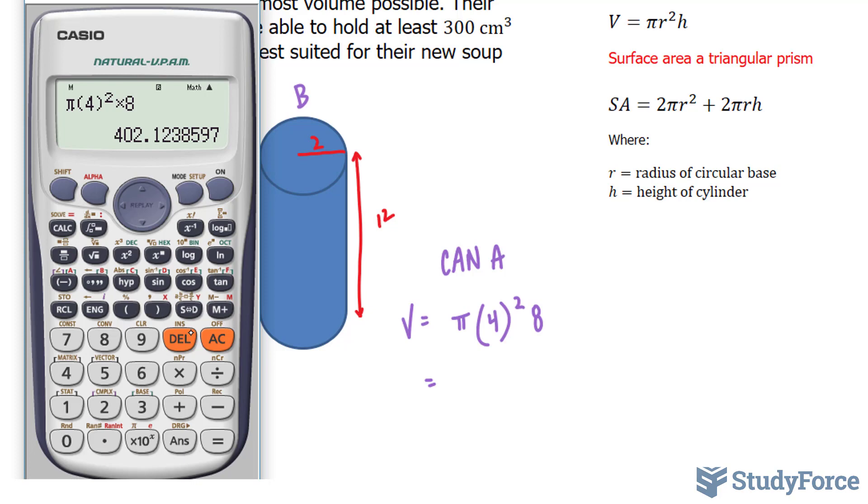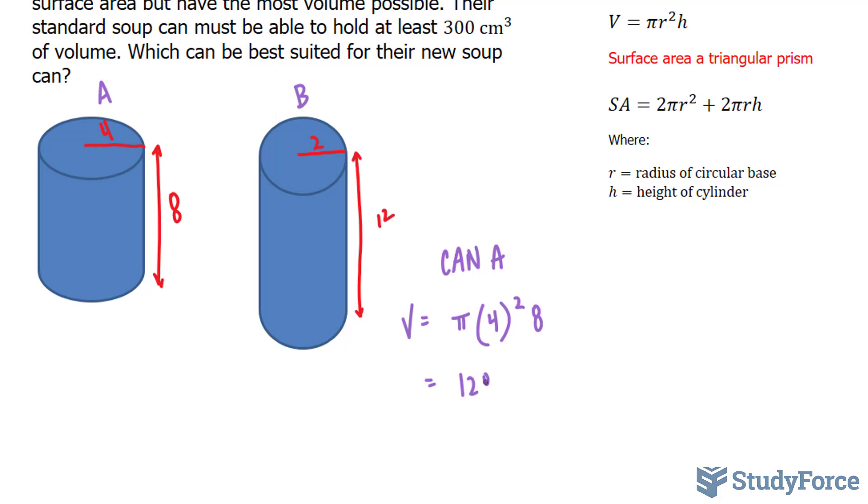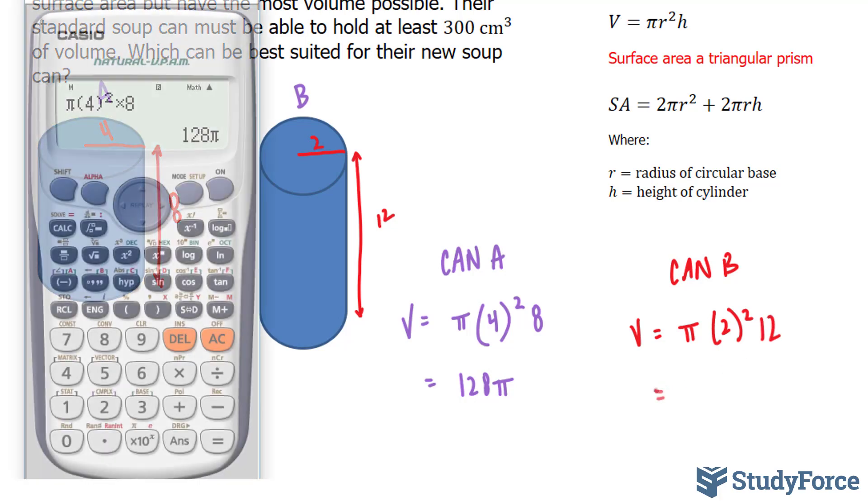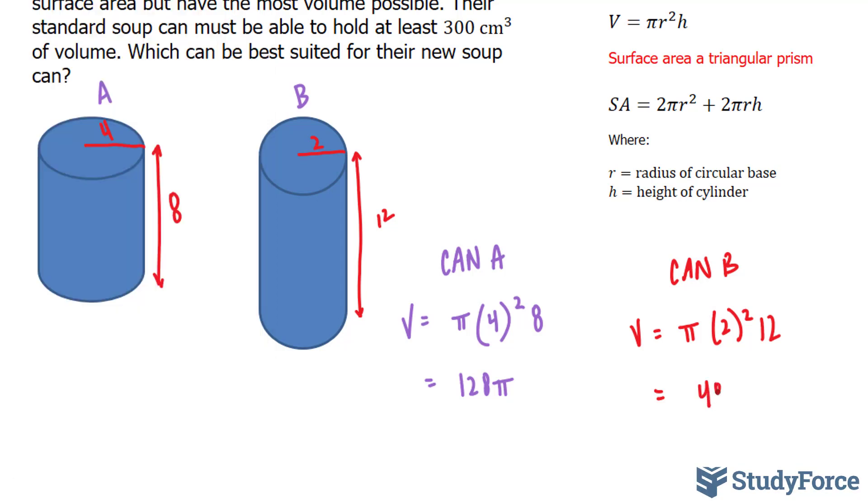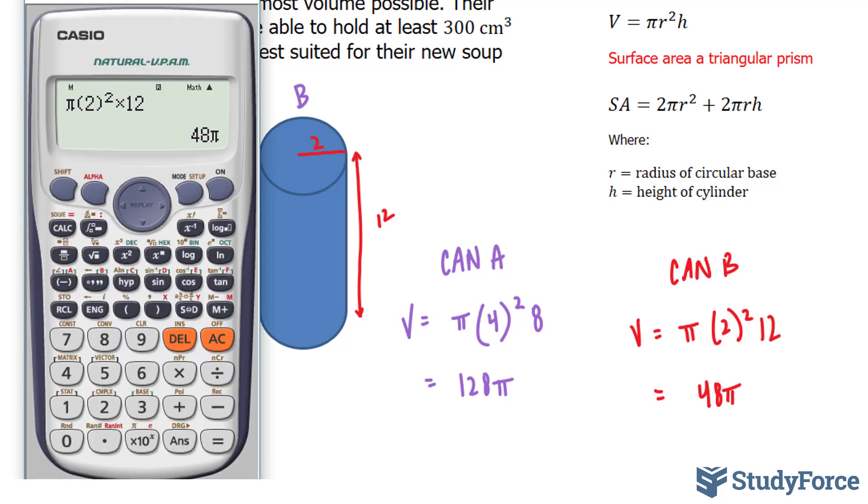But on your calculator you might see 402.12. I want to be extra precise, so I'm going to write down 128 pi. Now, I'll find the volume of can B. Using the same formula, pi times 2 to the power of 2 times 12. Once again, pi times 2 to the power of 2 times 12 gives me, this time, 48 pi. 48 pi, which is equal to 150.79.